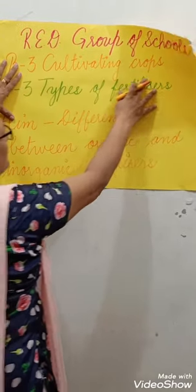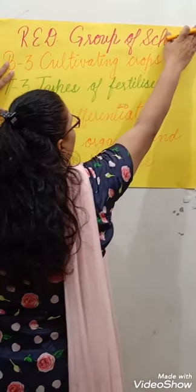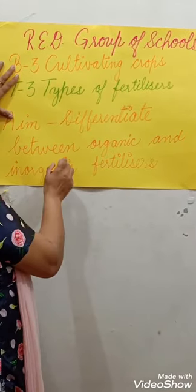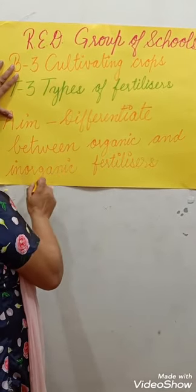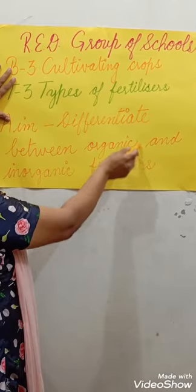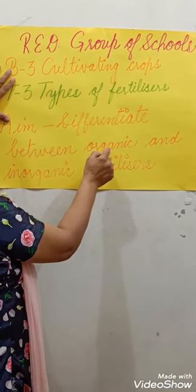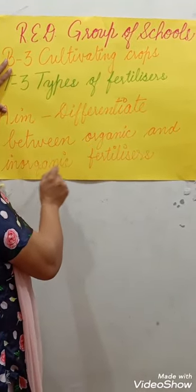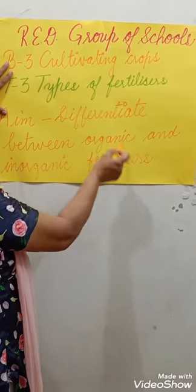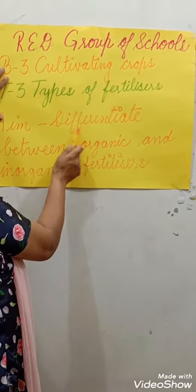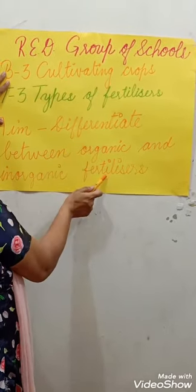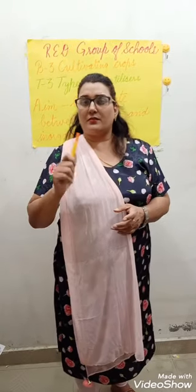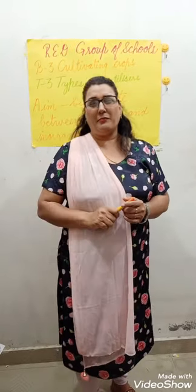Today our topic is Types of Fertilizers — Topic Number 3. The aim is to differentiate between organic and inorganic fertilizers. Organic means 'Javik' and inorganic means 'Ajavik.' What is the difference between them?